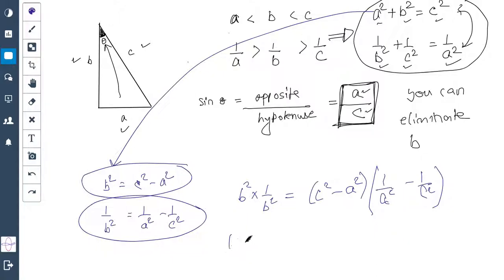So you have 1 equals... let's multiply this one with this one: we have C²/A² - 1 - 1 + A²/C².